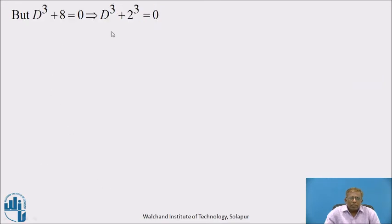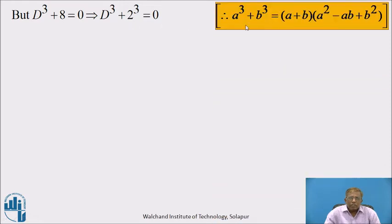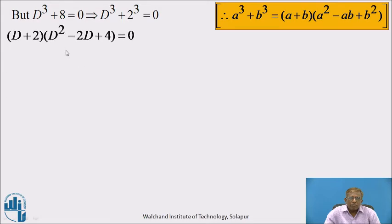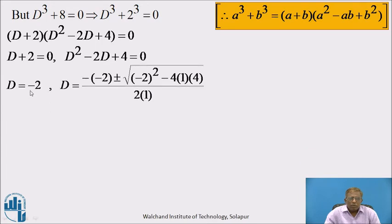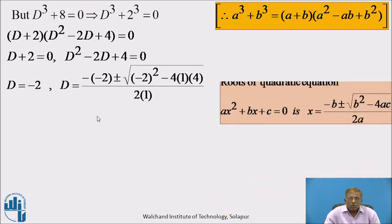D³ + 8 = 0 can be written as D³ + 2³ = 0, which is of type a³ + b³. Its factors are (a + b)(a² − ab + b²). Here a = D and b = 2, so the factors are (D + 2)(D² − 2D + 4) = 0. Separating into two equations: D + 2 = 0 and D² − 2D + 4 = 0. The first gives D = −2. For the second equation, we use the quadratic formula x = (−b ± √(b² − 4ac)) / 2a.